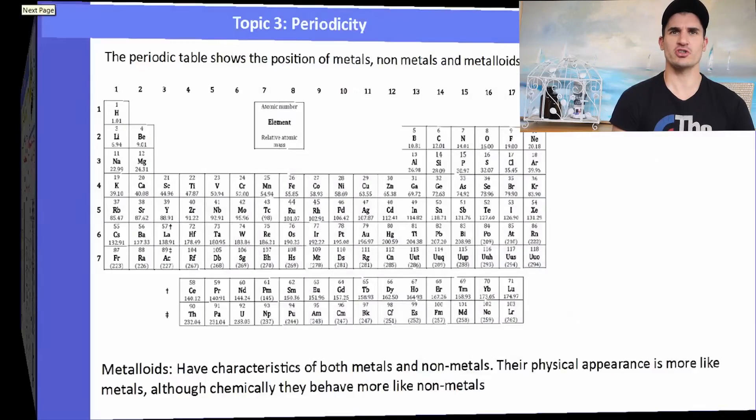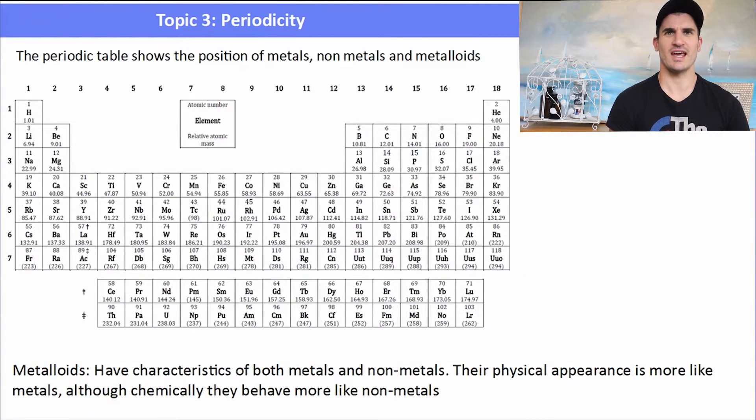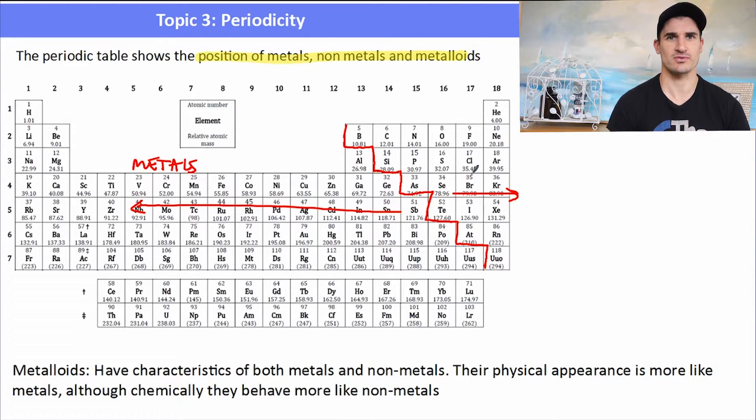Okay, the periodic table will also show the positions of the metals and the non-metals and the metalloids. So we have got this staircase that we are drawing for the periodic table. It runs from boron and zigzags its way down to the bottom of the periodic table. To the left of the staircase we have the metals, everything that has metallic behavior. On the right of the staircase we have the non-metals, so things that don't behave like metals. The metalloids - well, they have characteristics of both metals and non-metals.